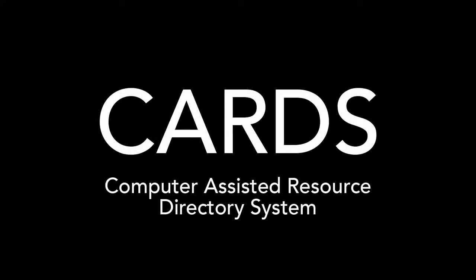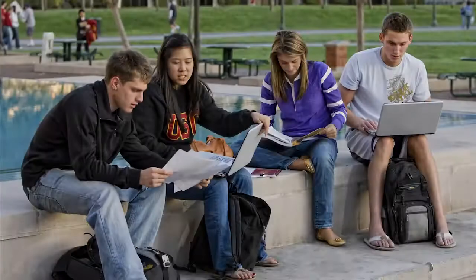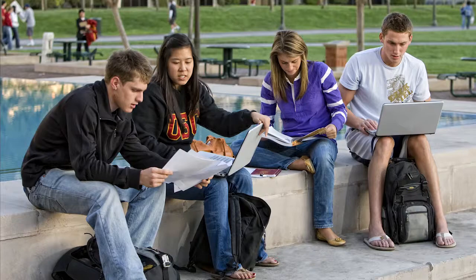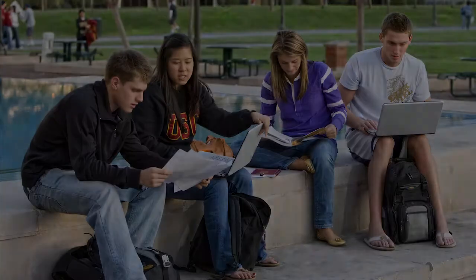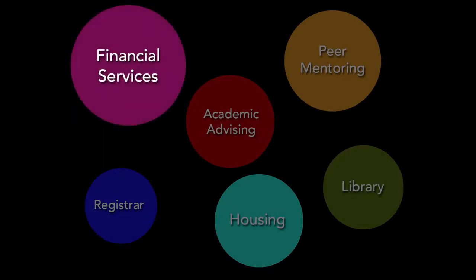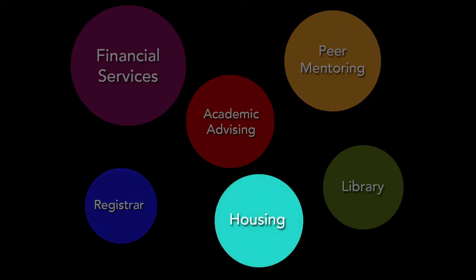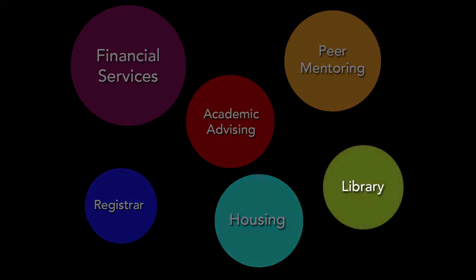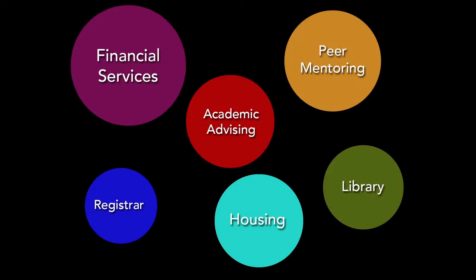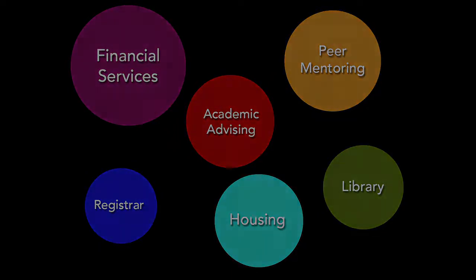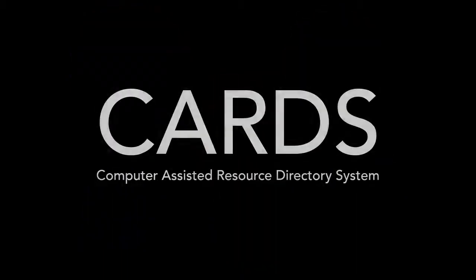On many campuses across the United States, students and staff alike share a frustrating problem. With the array of services available to students, the amount of information can be overwhelming. These services, such as financial aid, advising, peer mentoring, registration, housing, and library systems, are not connected to each other and are often located in disparate parts of the campus. There is no centralized place for students to receive this information. Getting basic help can become a daunting task, prompting many students, especially those with fewer resources, to simply give up.